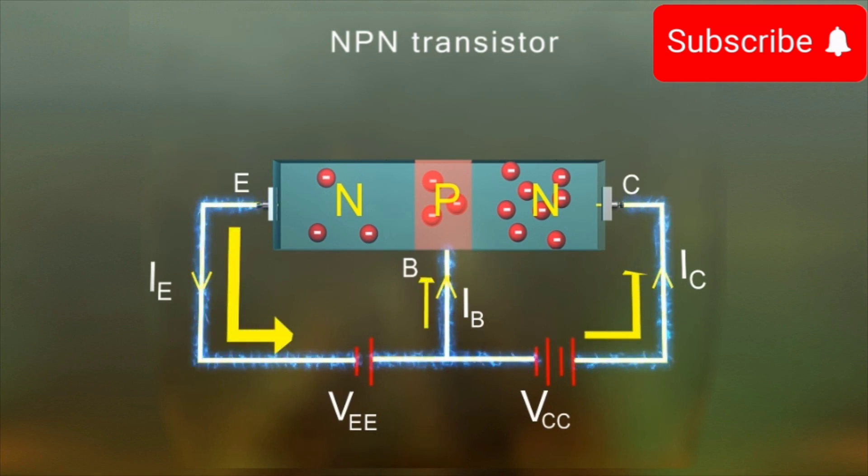Out of all the electrons entering the base from the emitter, 95% constitute the collector current and 5% constitute the base current.